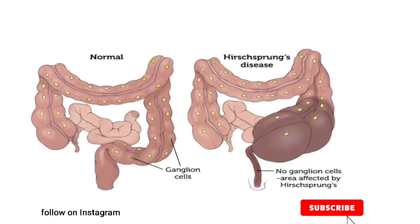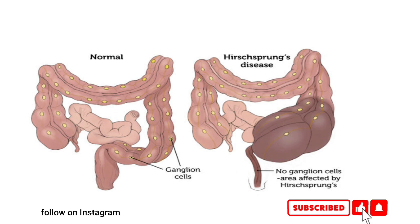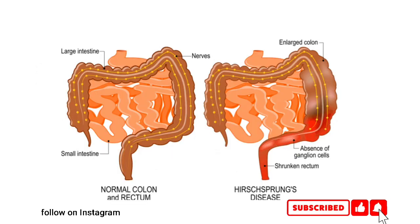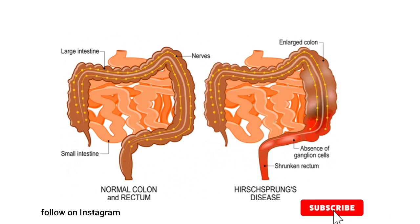Here we can see the enlargement of the colon, which is part of the large intestine, and damage to the nerves. The ganglionic cells are absent, and here we can see the enlargement of the tract.